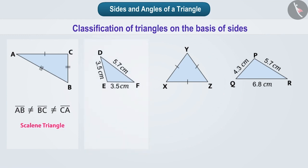By looking at triangle DEF, we find that the measure of side DE and side EF is equal but the measure of third arm DF is not equal to them. Since only 2 sides of this triangle are equal, it is an isosceles triangle.